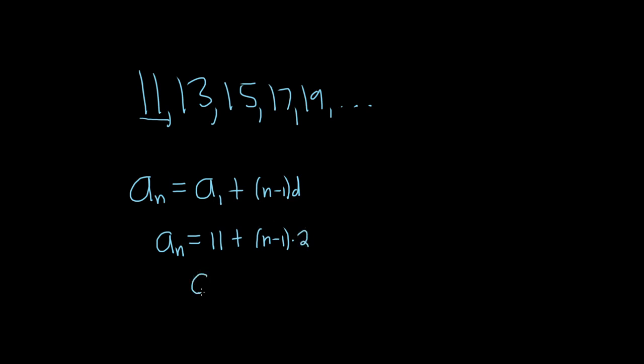The last thing maybe to do is to clean this up. So a sub n is equal to 11 plus, distribute so we get 2n, distribute here so we get minus 2.